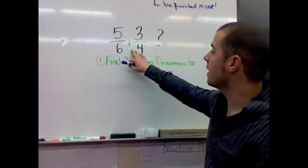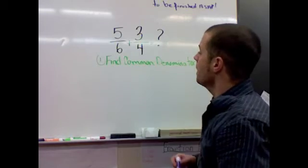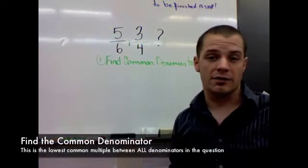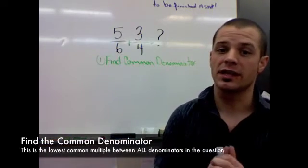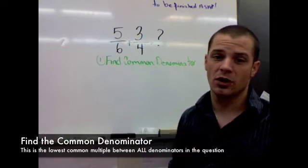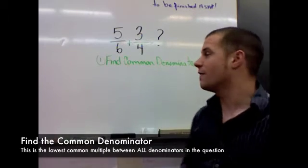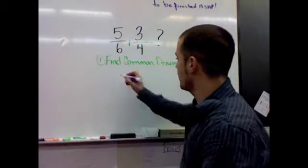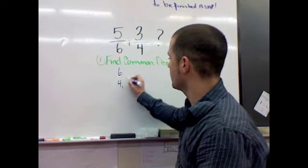Here I have 5/6 plus 3/4. The first step when you're adding and subtracting fractions, regardless of which operation it is, is you have to find a common denominator. In case you've forgotten how you find a common denominator, what you do is you list the factors of each denominator.